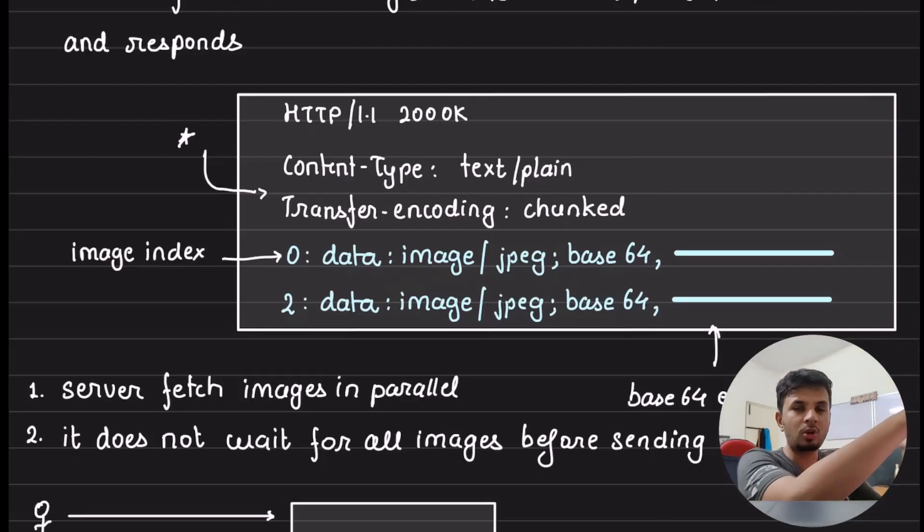So, here you got a batch request from your client around four paths. Your server is going to your storage, be it S3, be it any place. It goes to the storage, gets that image data, gets that actual image, converts it into base64, it encodes it into base64 and then sends it back in this response.